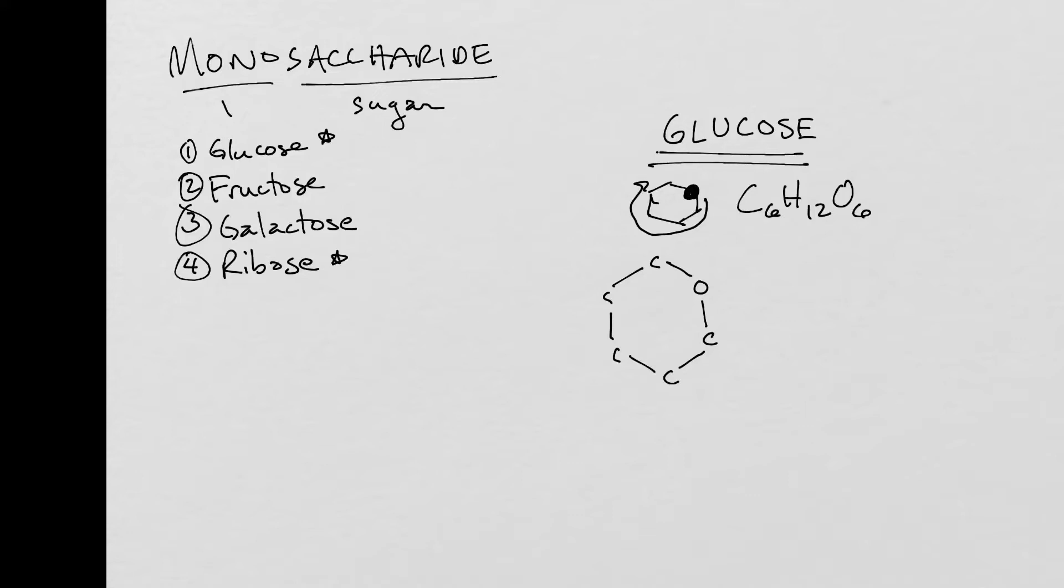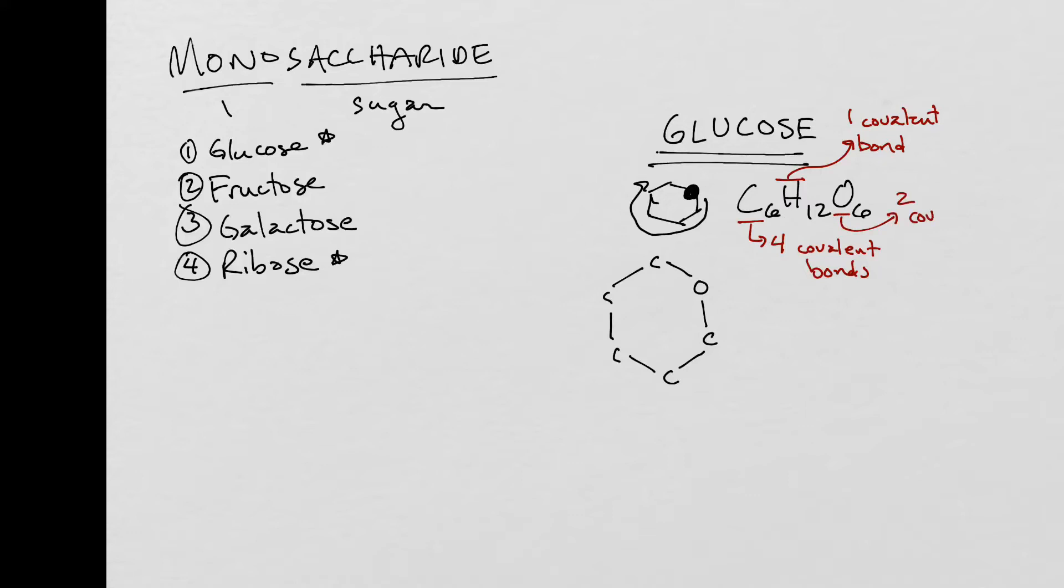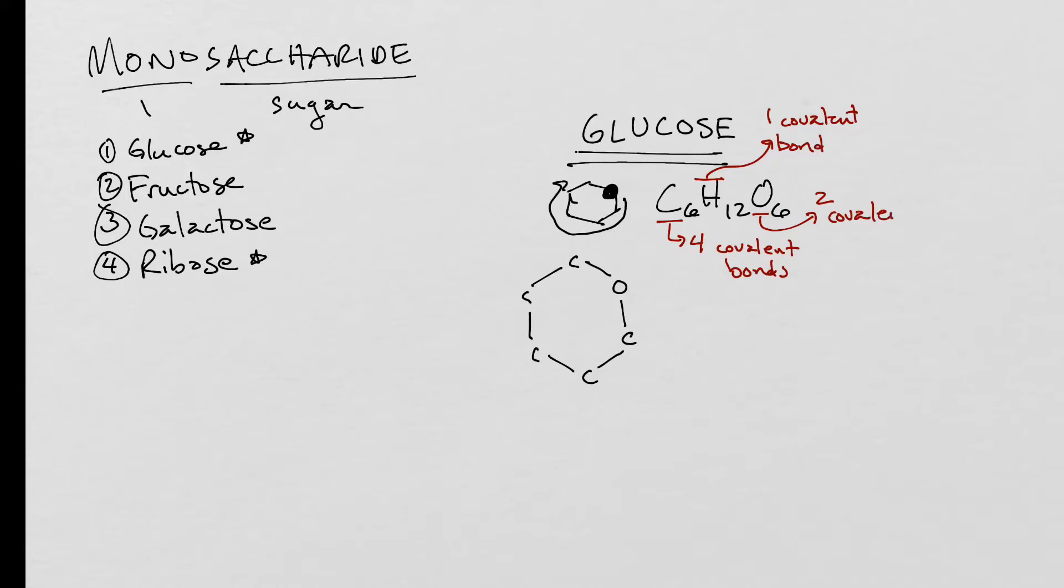We mentioned this in class today a little bit. But carbon needs to form four covalent bonds. Hydrogen needs to form one covalent bond in order for it to be stable. And oxygen needs to form two covalent bonds in order to be stable.